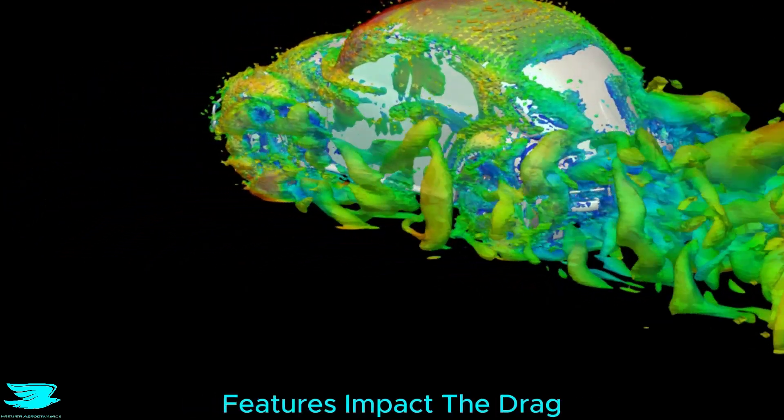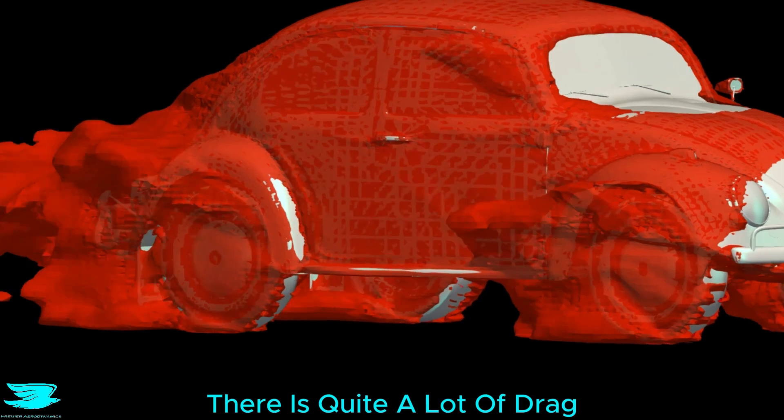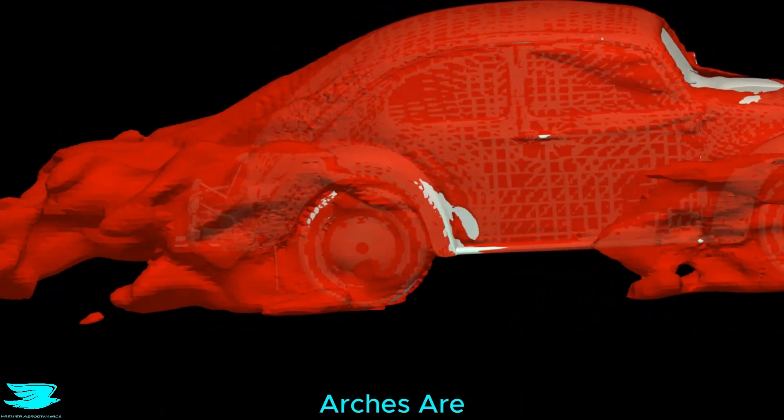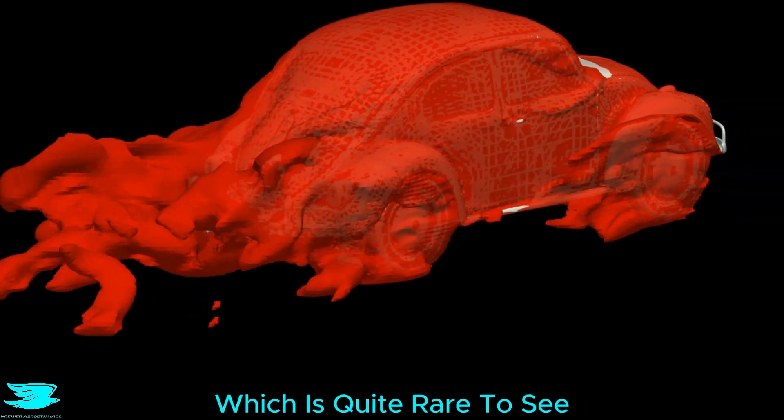Let's see how these features impact the drag. As expected, there is quite a lot of drag coming from the wheel itself, particularly near the contact patch, but the wheel arches are producing even more drag than the wheels themselves, which is quite rare to see.